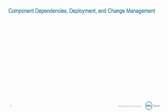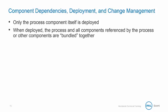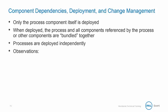Let's discuss how component dependencies affect deployment. Only the process itself is deployed, so individual components like a connector or a map cannot be deployed independently. If a change is made in one or more components, then the updated process needs to be deployed. When deployed, the process and all components referenced by the process or other components are bundled together. Processes are deployed independently, and that causes some interesting observations about component versioning.